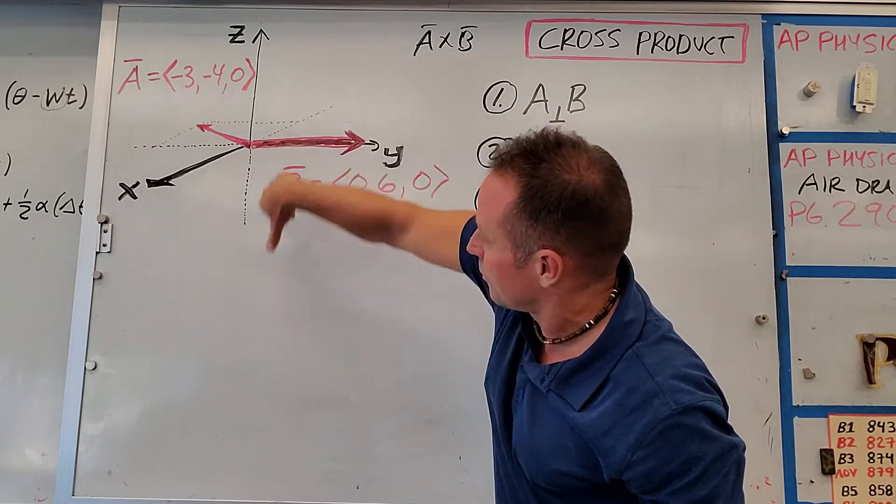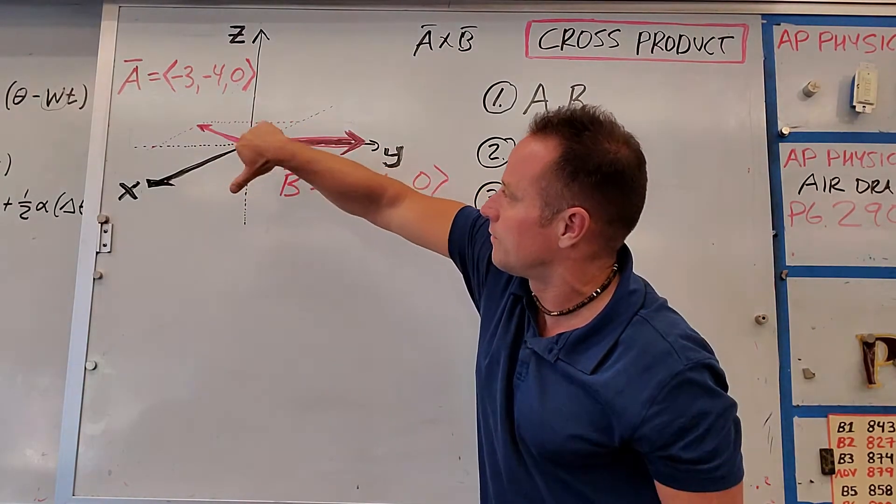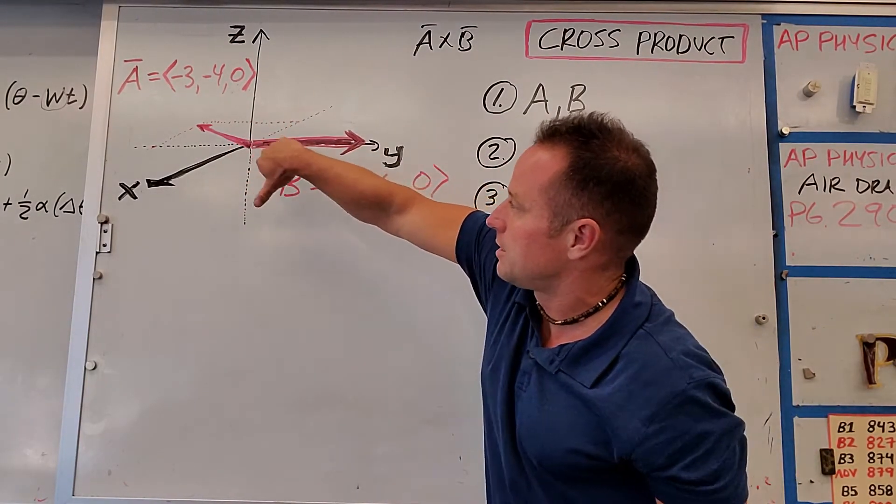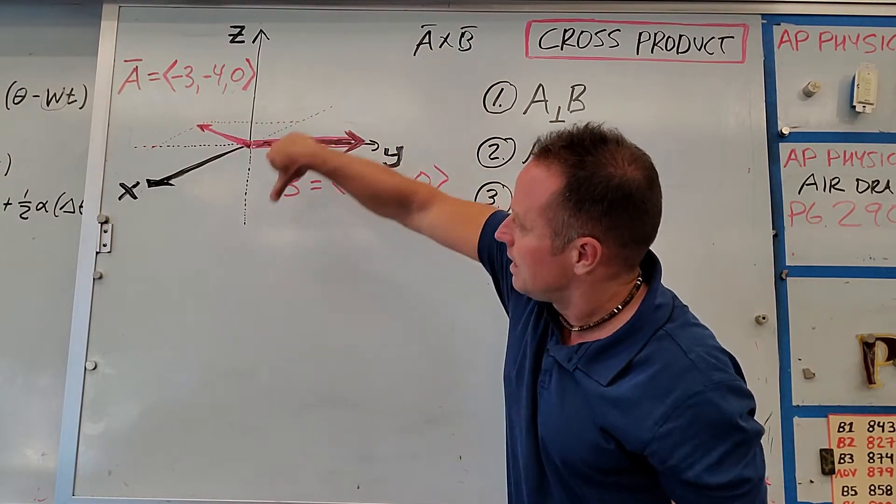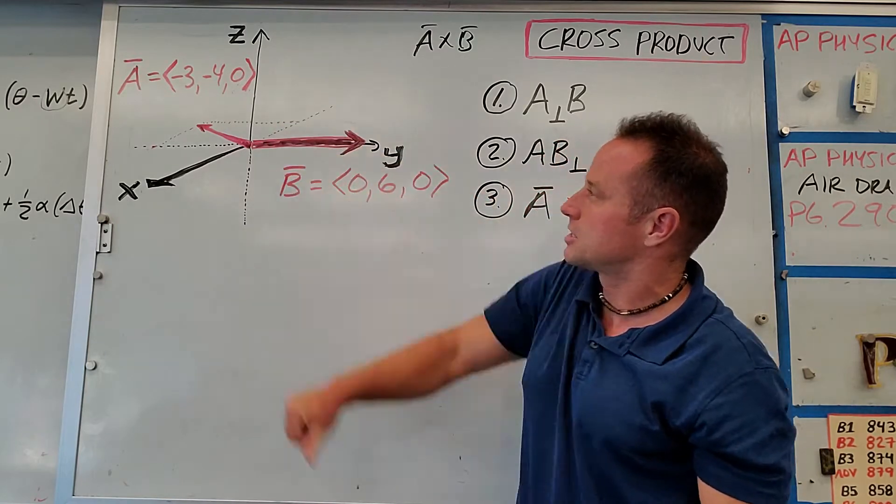And your thumb will point along the direction of the cross product. So you do this with your right hand. Right-hand fingers along A, fold it into B, and so the cross product of A and B is going to be down.